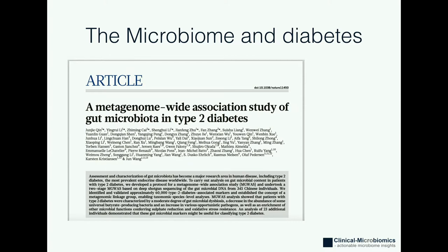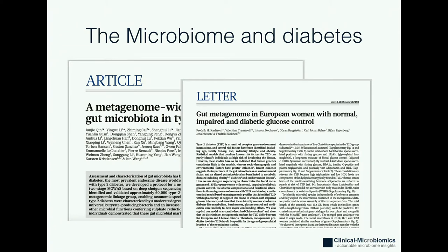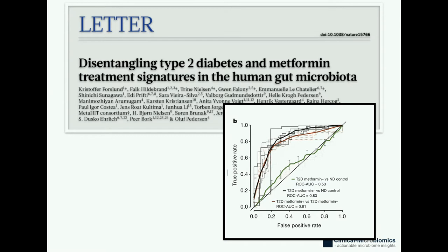Several studies have confirmed this, including Swedish studies in elder women. But in 2015, we observed that the treatment diabetes patients were taking — metformin, the first-line drug — actually influenced our signal so much that the effect of type 2 diabetes itself was much harder to observe. Very recently, a paper claimed that part of metformin's mechanism is actually to change the microbiome in a healthier direction, alleviating some gut microbiome problems in type 2 diabetes.